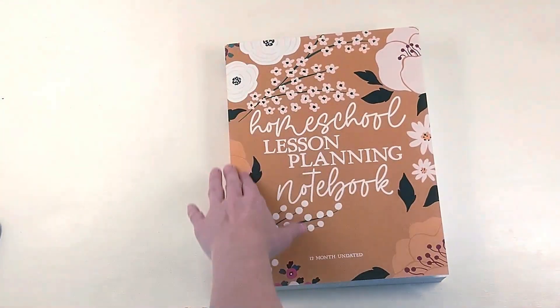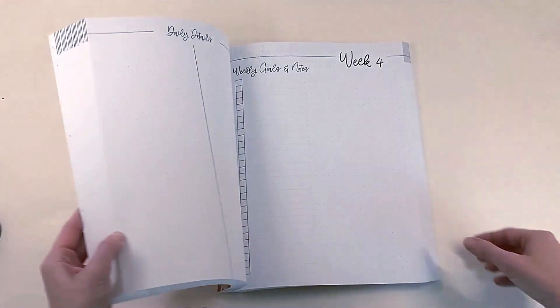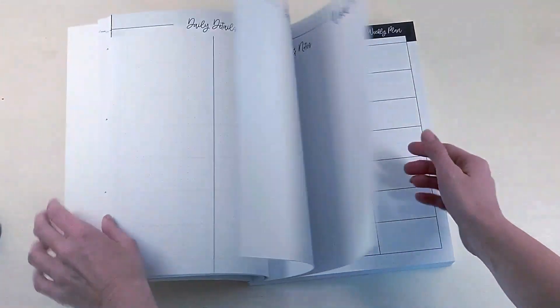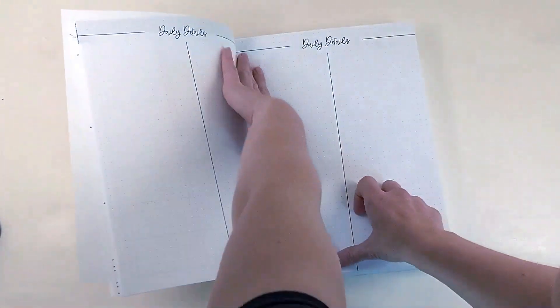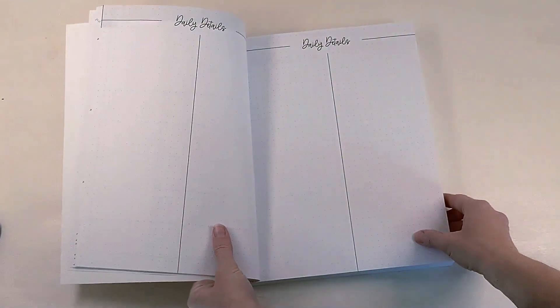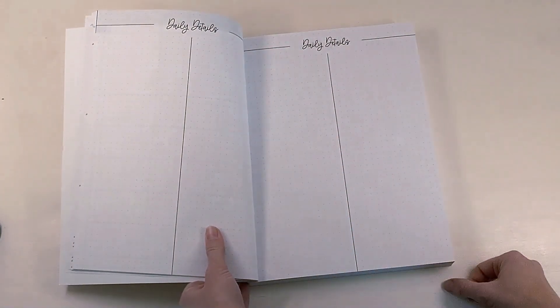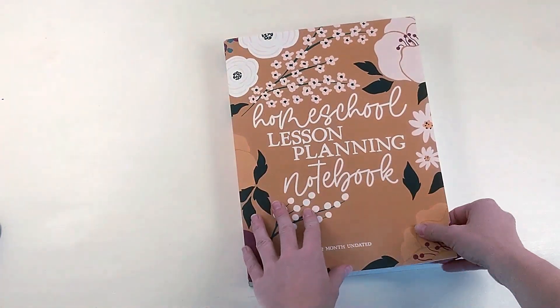Another thing I did mention is the binding. Even though there's a lot of space to write, it's kind of, especially at the beginning of the book, it kind of fights you to stay open. So you'd have to crease it really hard for you to kind of keep that page from interfering with your writing.